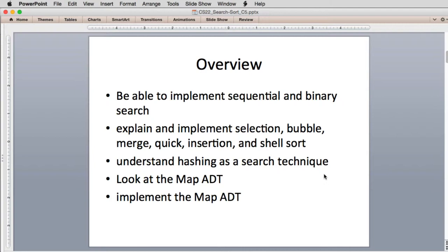We're going to implement selection, bubble, merge, quick, insertion, and shell sort. Along with the hashing technique, we're going to look at a map abstract data type, which is similar to dictionary in Python, and look at how you would implement that.